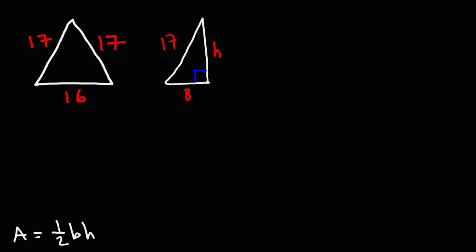Because we have a right triangle, we could use the Pythagorean theorem to calculate the value of h. So, it's going to be a squared plus b squared is equal to c squared.